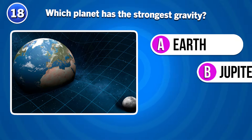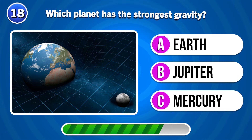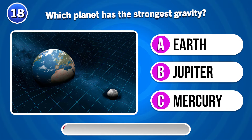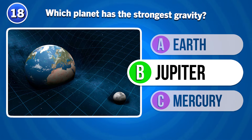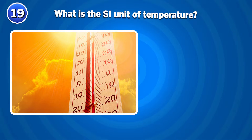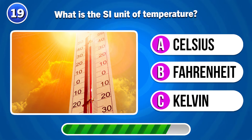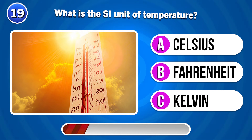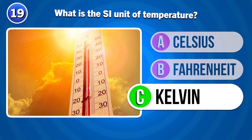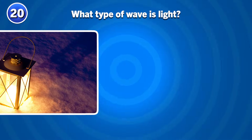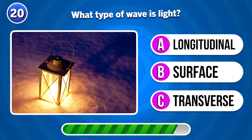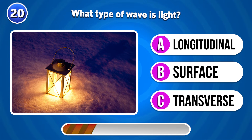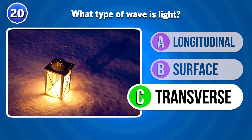Which planet has the strongest gravity? It's Jupiter. What is the SI unit of temperature? Kelvin. What type of wave is light? It's transverse.